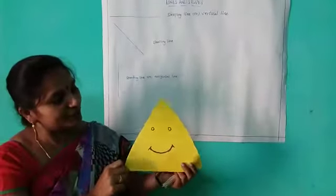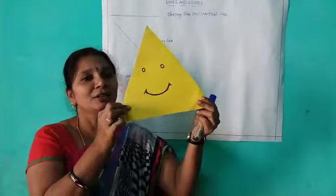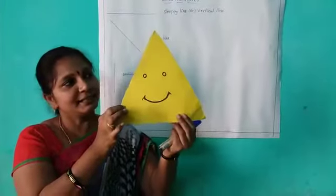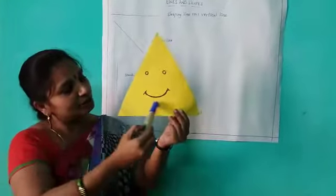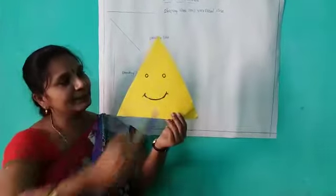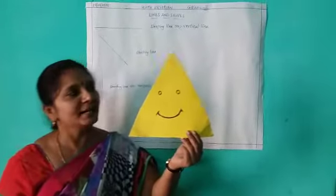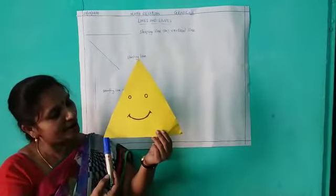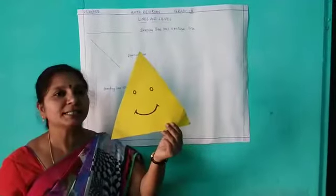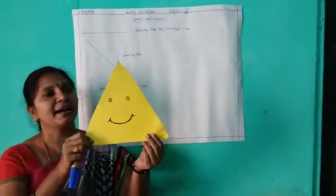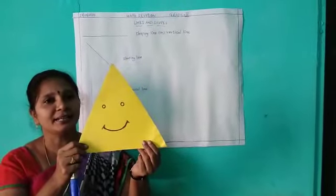Now see, what is this picture? Triangle. A triangle has how many sides? See 1, 2, 3. It has 3 sides. And how many corners does it have? 1, 2, 3. How many corners? 3 corners. A triangle has 3 sides and 3 corners.